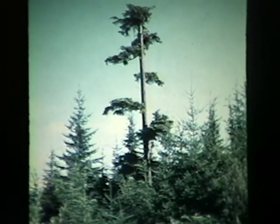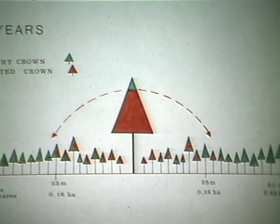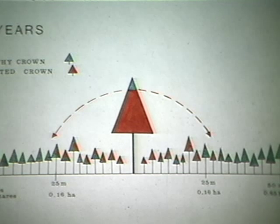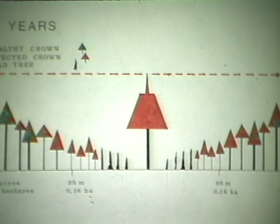From a single infected tree, mistletoe spreads slowly, although in 15 years the disease will cover a radius of nearly 22 meters. Over an 80-year period, the disease will expand to a radius of 45 meters, destroying many of the trees in the immediate vicinity.